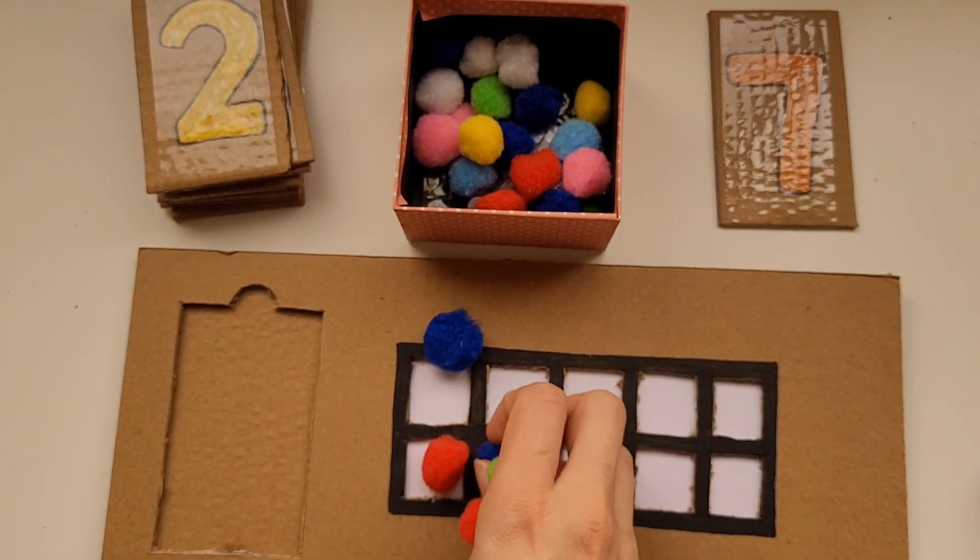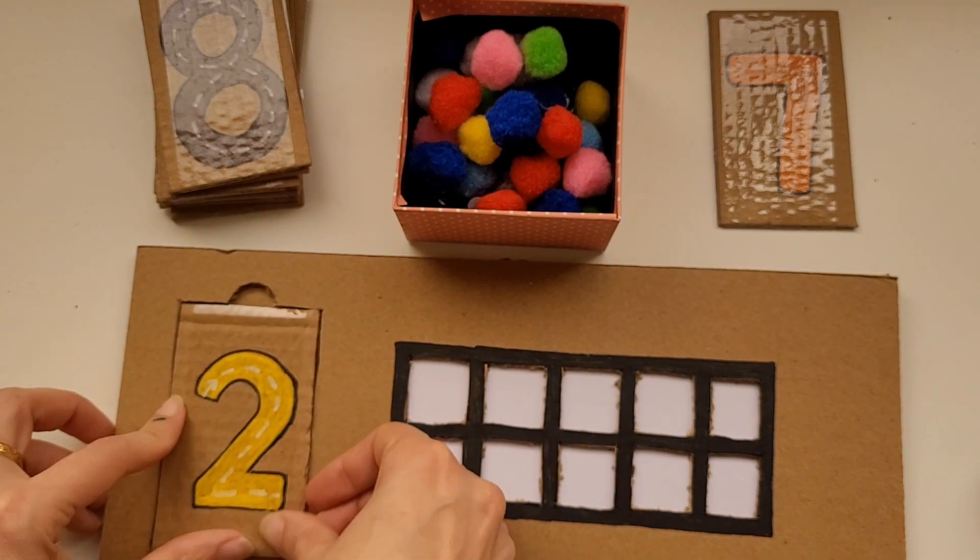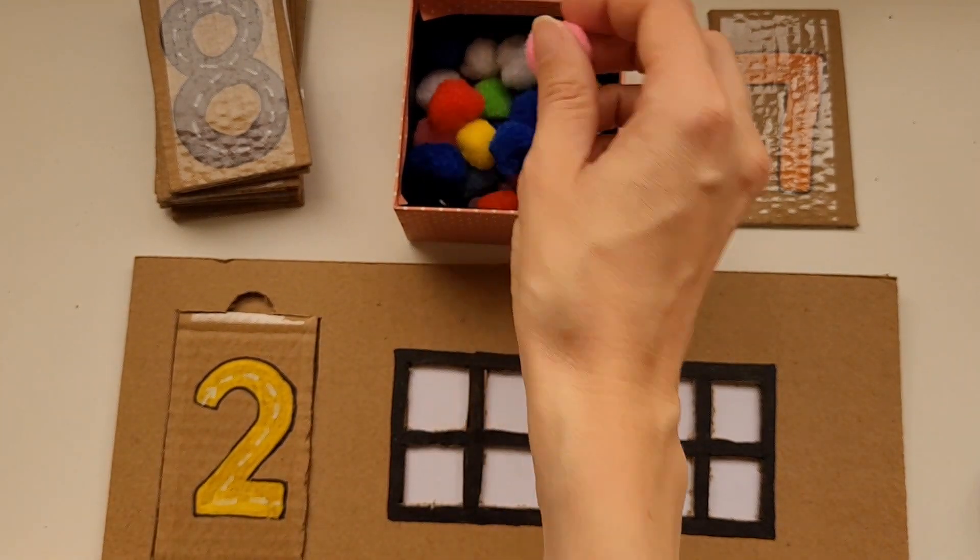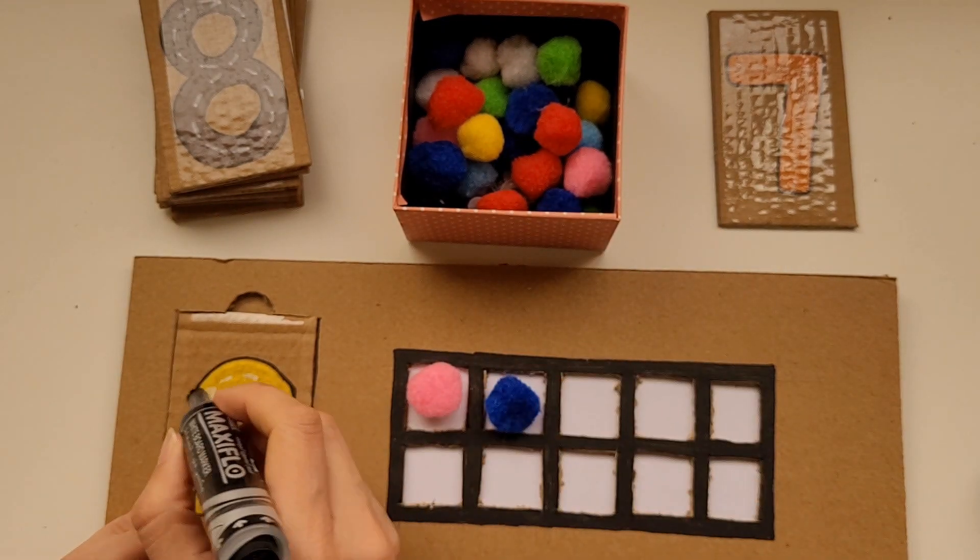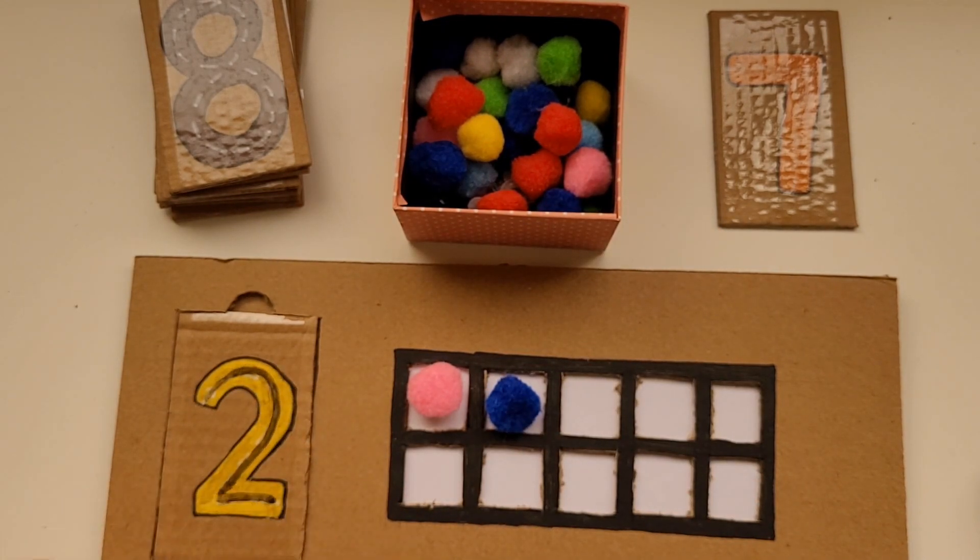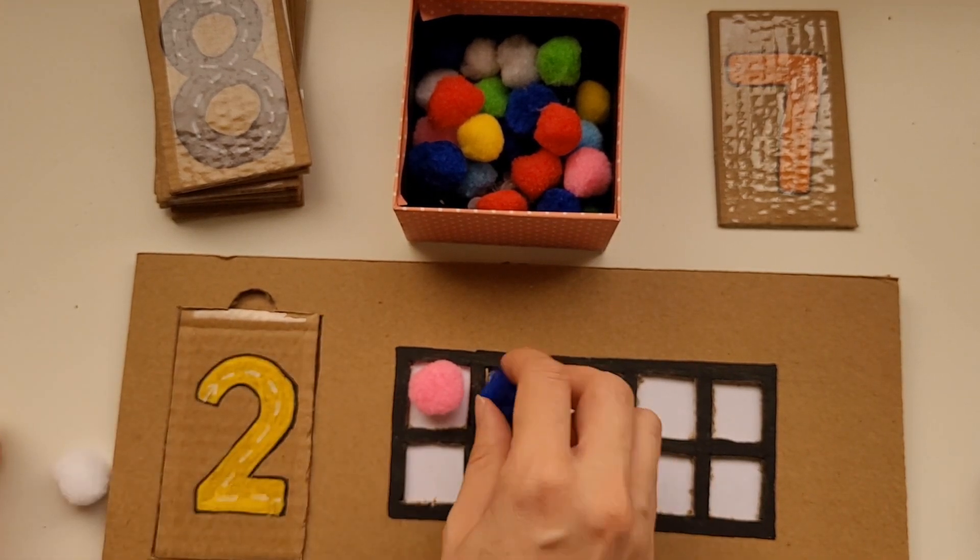They can remove the card and remove the pom-poms and then do the next number. Over here I've got the number 2. I'm going to match it with two pom-poms and then practice tracing the number 2. I hope your little one enjoys this activity.